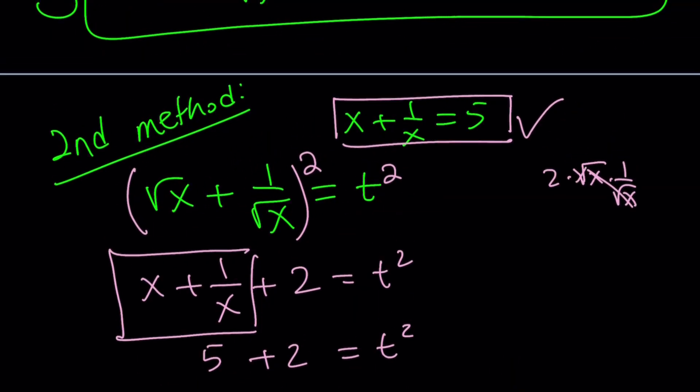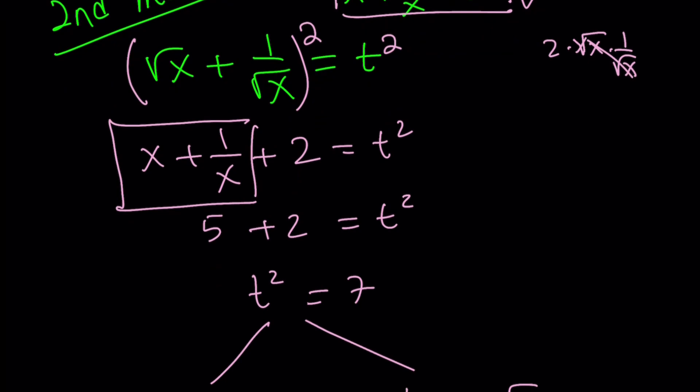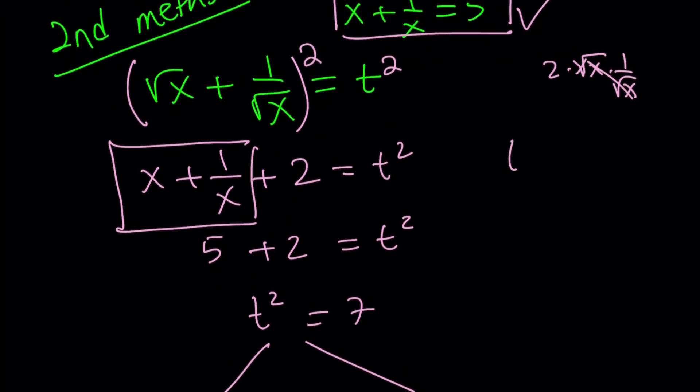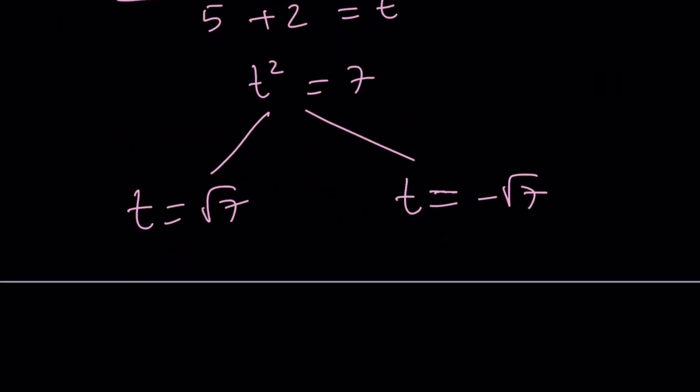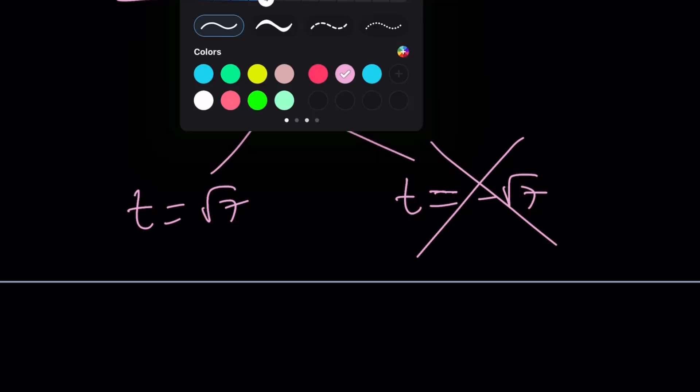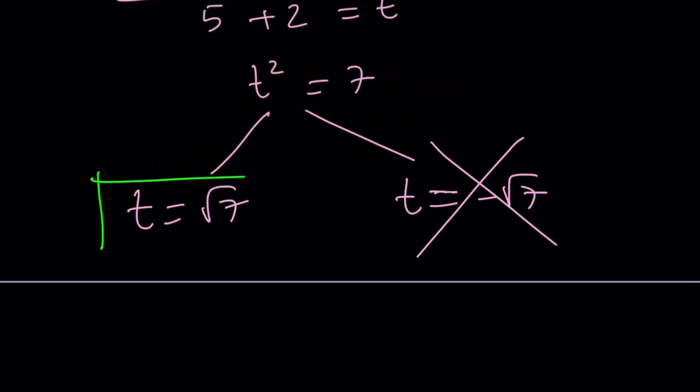But, t represents square root of x plus 1 over square root of x. Therefore, it needs to be positive, because these are positive quantities. The sum is positive. We're not going to take negative square root of 7. So, we're going to go with square root of 7. And this brings us to the end of this video.